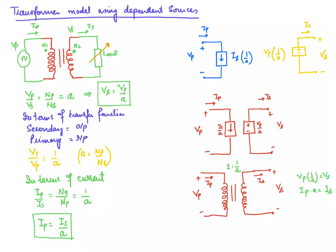In this circuit, the current is Ip, the secondary current is Is, primary voltage is Vp, and secondary voltage is Vs. The turn ratio of the transformer equals Np/Ns = a, which can also be written as 1 : (Ns/Np) = 1 : (1/a). The common factor 1/a appears in both the dependent current source and the dependent voltage source expressions, and it represents the normalized turn ratio.